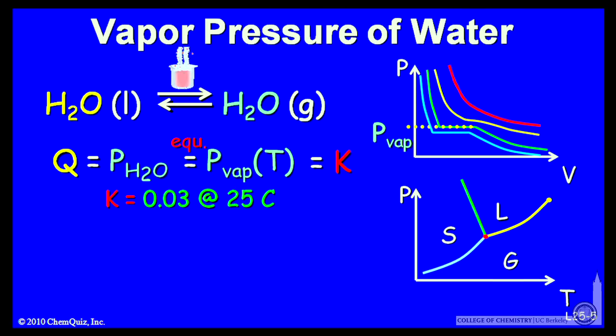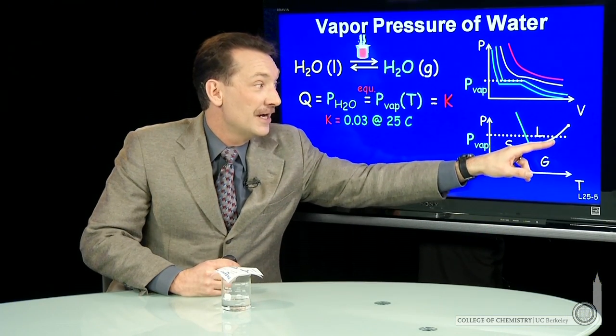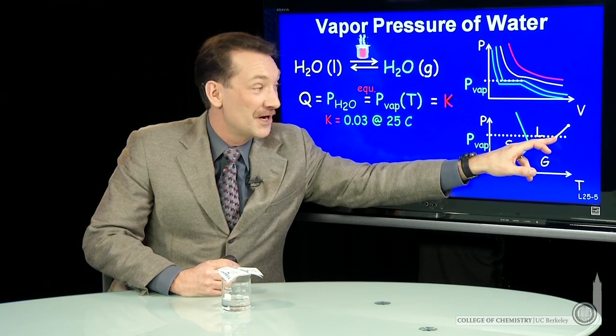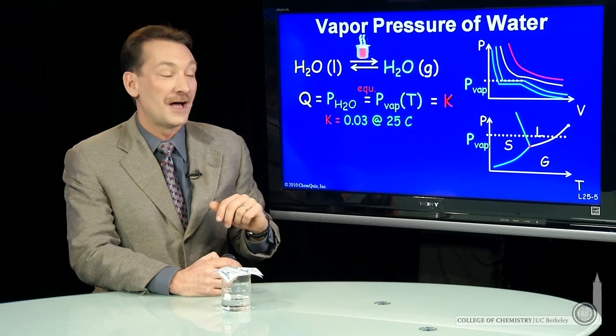We could also find that on a pressure temperature diagram, a phase diagram. We could look at 25 degrees C and read off the vapor pressure. We would go to 25 degrees C, come up to the liquid gas equilibrium line. That's when they're in equilibrium. And read the temperature and the vapor pressure right off this plot.